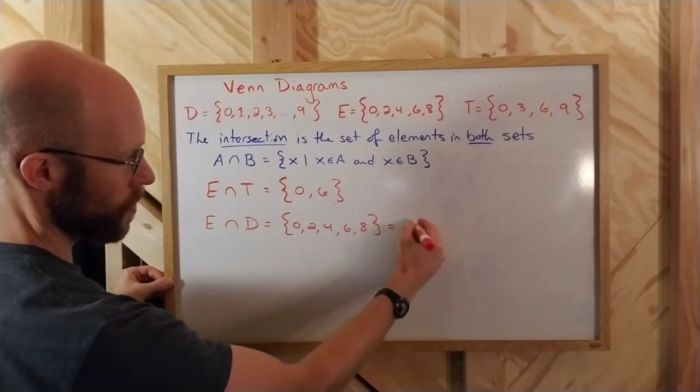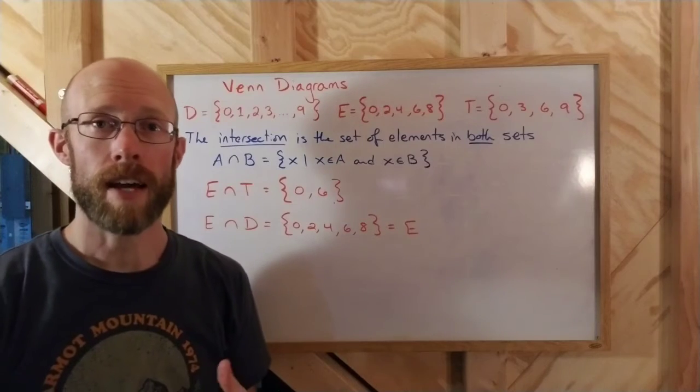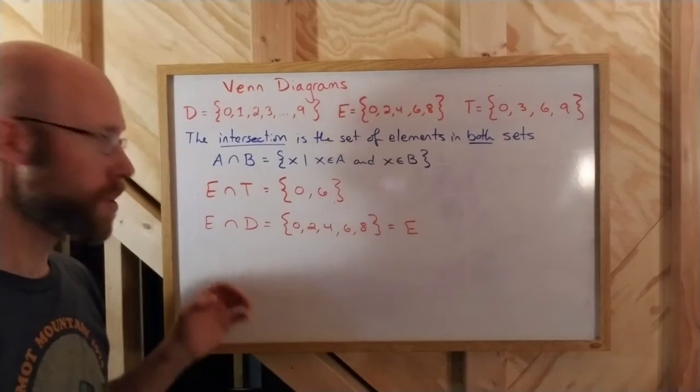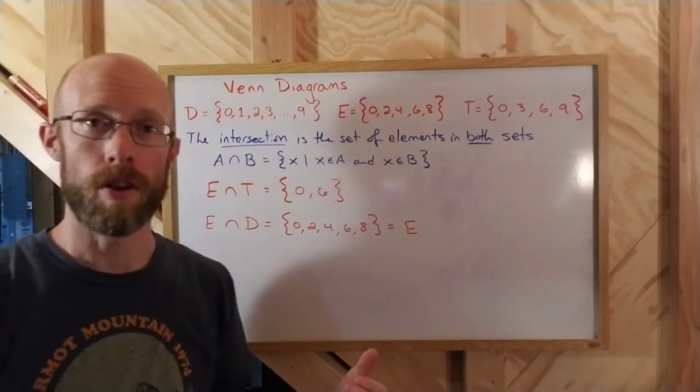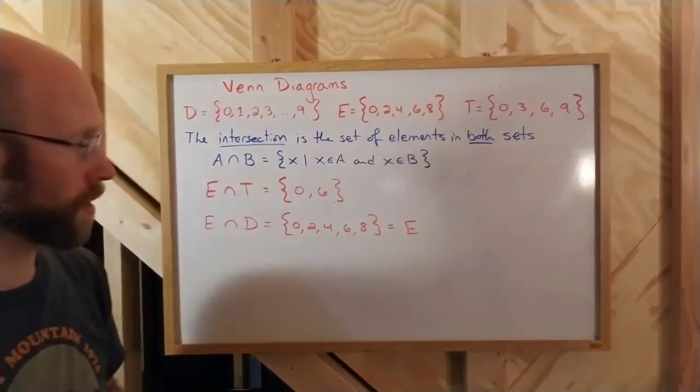Which in our case is equivalent to the smaller set E. In fact, any time one set is a subset of the other, then their intersection will be the smaller set, the subset.